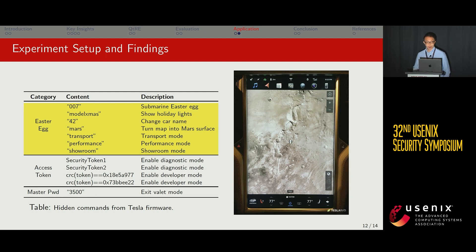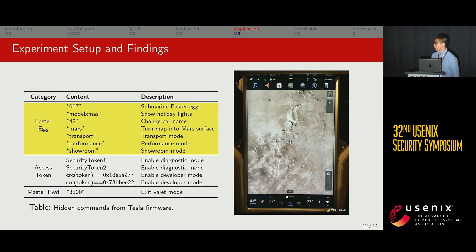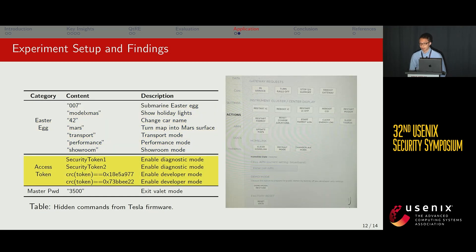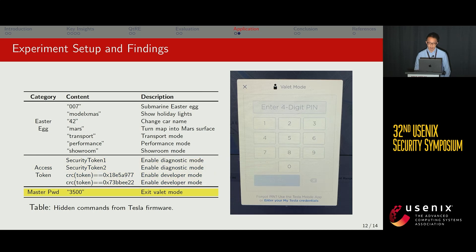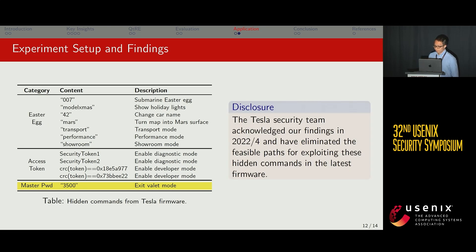Our findings fall into three categories. The first consists of Easter eggs known to the public, such as the famous Mars Easter egg that turns the Tesla navigation map into the surface of Mars. We also identified several access tokens and a master password known to the public. Four access tokens were found — some vehicle-specific — which allow one to enable hidden modes such as diagnostic mode or developer mode, enabling manipulation of sensitive settings. We also found a master password, a constant value allowing any user to arbitrarily exit valet mode regardless of the PIN set by the user. We disclosed all findings to the Tesla team, who acknowledged them in April 2022 and eliminated all feasible paths for exploiting these hidden commands in the latest firmware version.